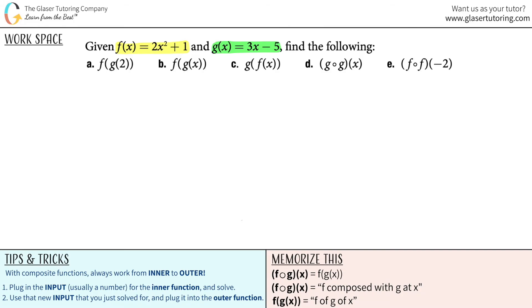So let's start with a. We want to know what f of g of 2 is. Welcome to composite functions, or composition of functions. Basically, what we're going to be doing is we're going to be plugging in one function, the g function, into the f function. Composite functions is when you basically take two functions and put them together. The key to composite functions — they might seem scary, but I promise you they're super easy.